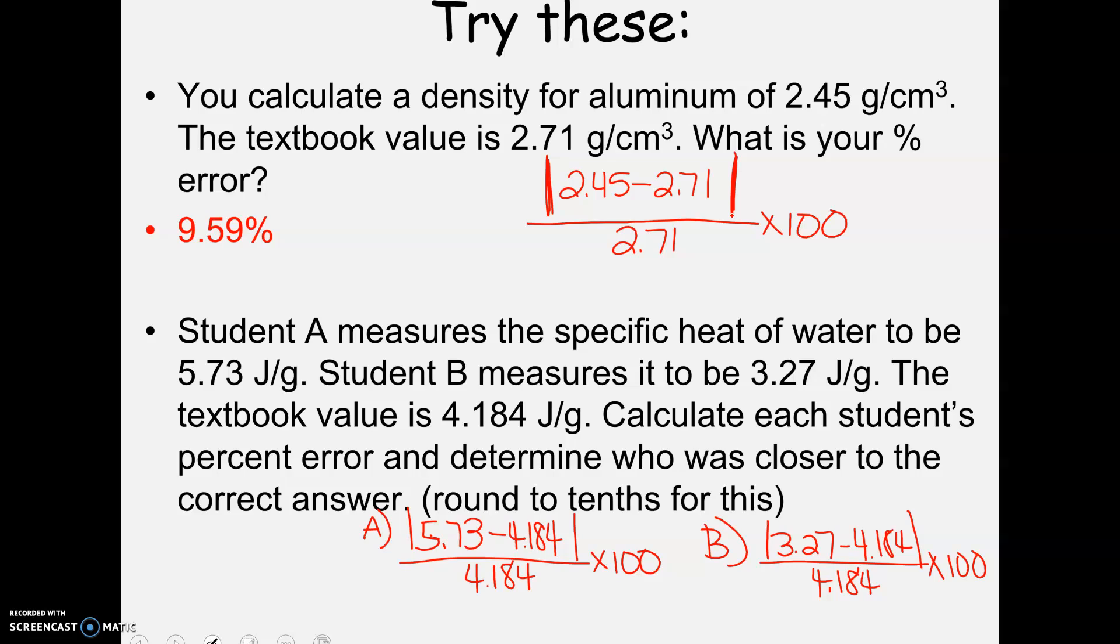You can go ahead and make it positive if you want to, since it's always going to be absolute value gives you a positive number. Then I hit divide by 2.71 times 100, and the answer you should get is 9.59%. Now, you may wonder, where do I round to? And we haven't talked about that. That's actually coming up in one of our next lectures. But I would say a good rule of thumb for now is just round to the same number of digits as your original numbers. So you see how my two original numbers had three digits? I rounded my answer to three digits.